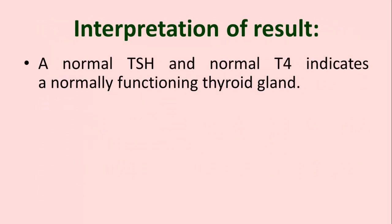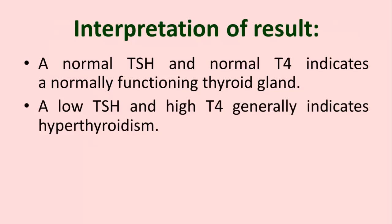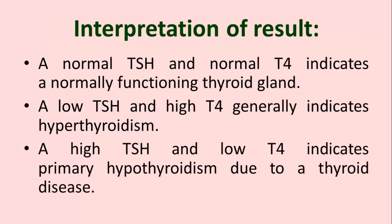Interpretation of results: a normal TSH and normal T4 indicates a normally functioning thyroid gland. A low TSH and high T4 generally indicates hyperthyroidism. A high TSH and low T4 indicates primary hypothyroidism due to a thyroid disease.